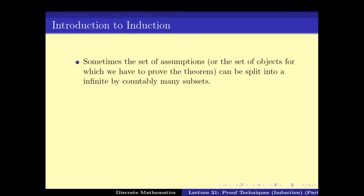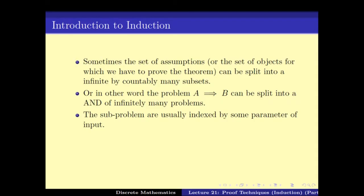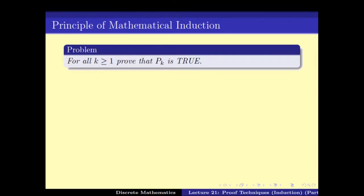The main idea is that one can split up the assumptions into a possibly infinite number of subsets. This implies that the problem A implies B gets split into an AND of infinitely many problems, usually parameterized by some parameter of the input. So the problem A implies B is the same as P1 and P2 and so on till infinity — that is, for all K, Pk is true.